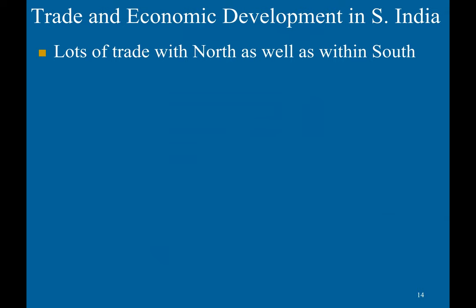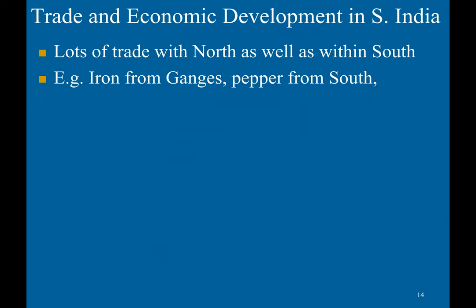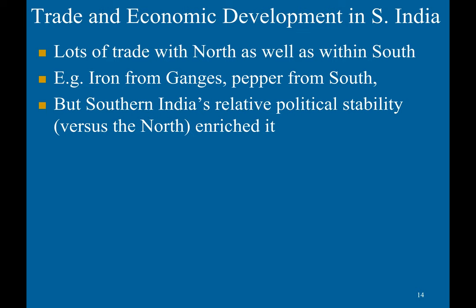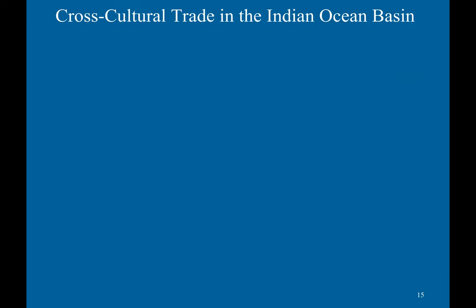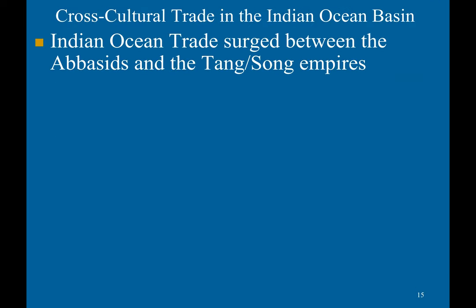There was lots of trade with northern India as well as within southern India. For example, iron came from the Ganges region and pepper from the south. Southern India's relative political stability, compared to the north, actually helped enrich it. Local Hindu temples became economic, banking, and social centers, which was especially helpful as the Chola did not interfere with them much.